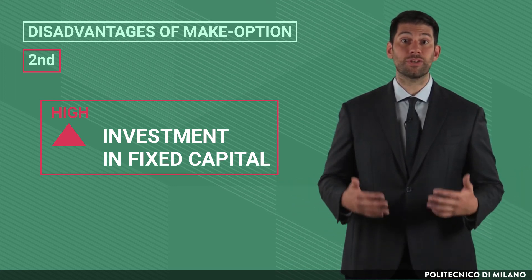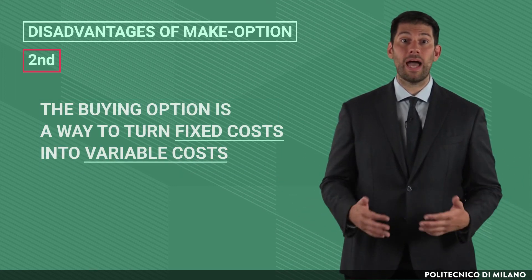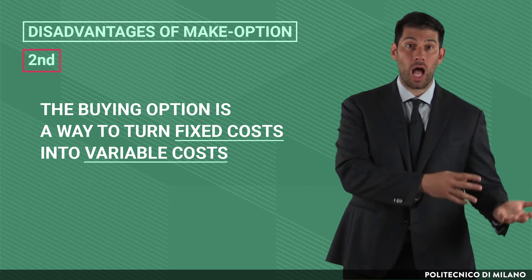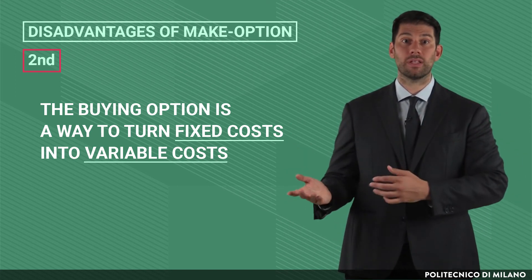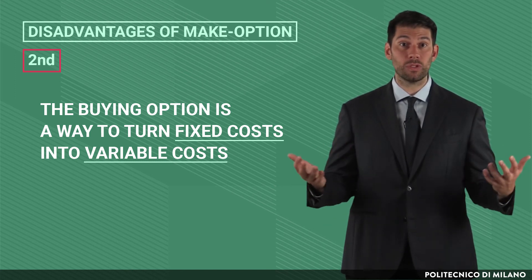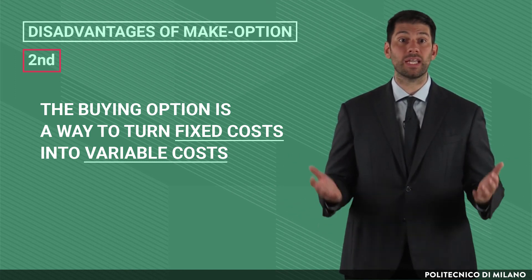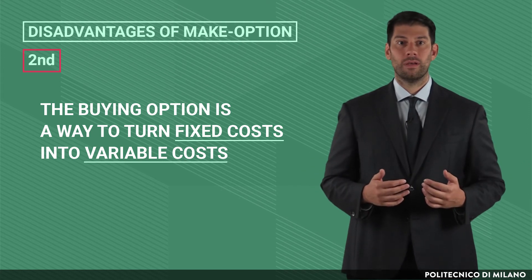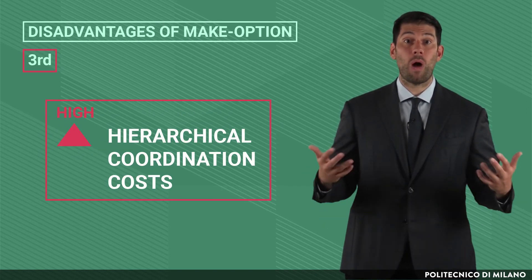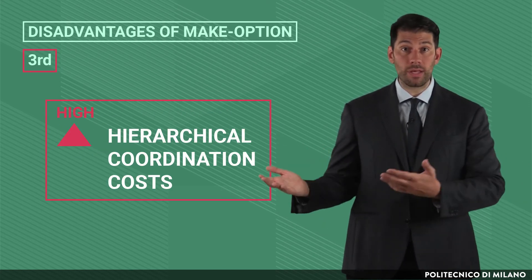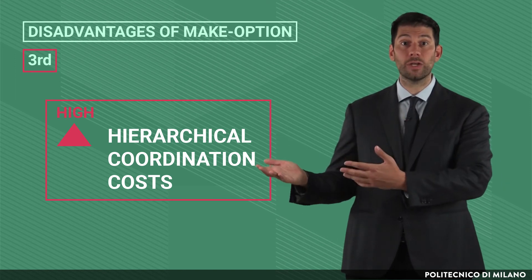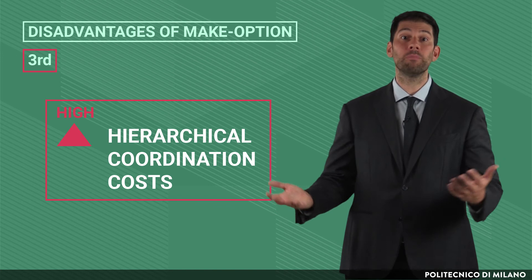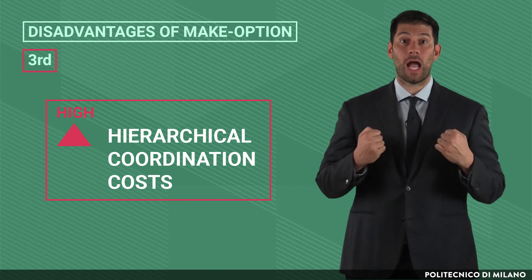Indeed, contrary to making, the buy-in option is a way to turn fixed costs into variable costs, depending on the actual volumes the company supplies from the external market. The make option also requires costs linked to hierarchic coordination of the activity, which becomes part of the company itself.